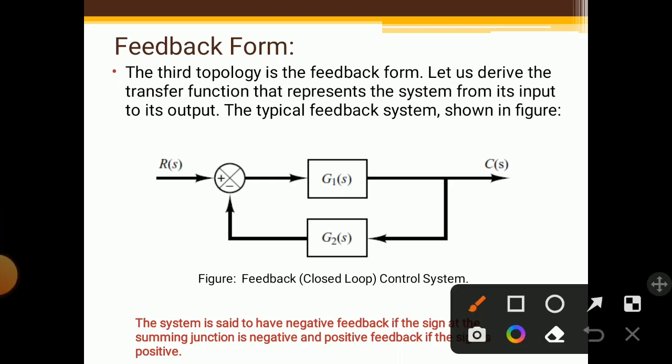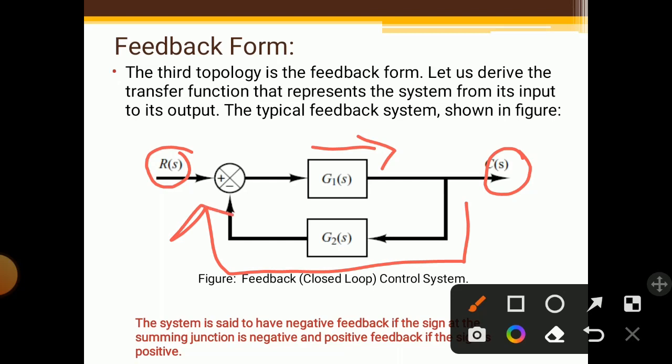This is called as a feedback loop. R(s) is the input and C(s) is the output. G1(s) is one element, and G2(s) is called as the feedback element. Now we have to check the sign of this feedback signal. If this feedback signal has a negative sign, then it is called a negative feedback loop. And if this feedback signal has a positive sign, then it is called a positive feedback loop.